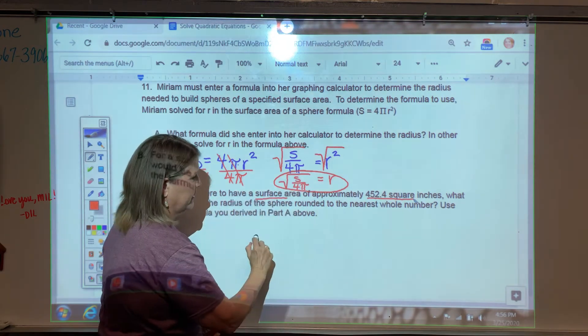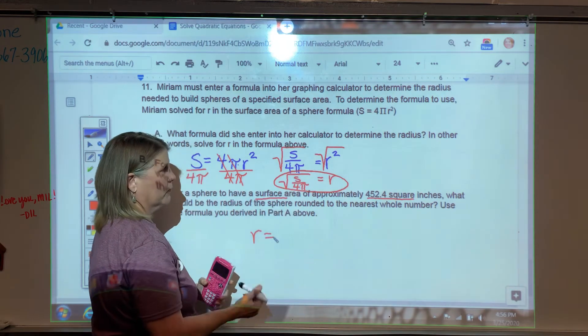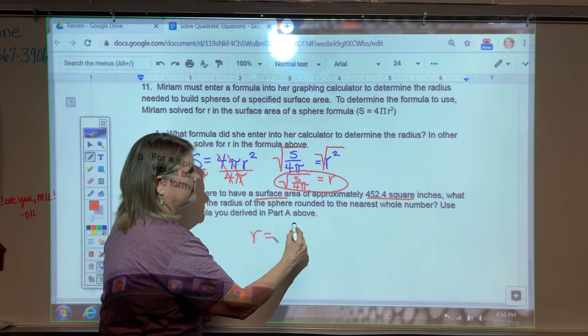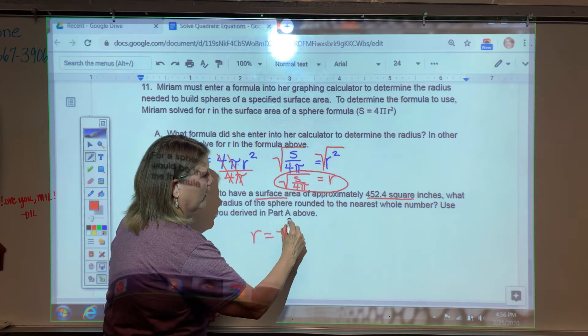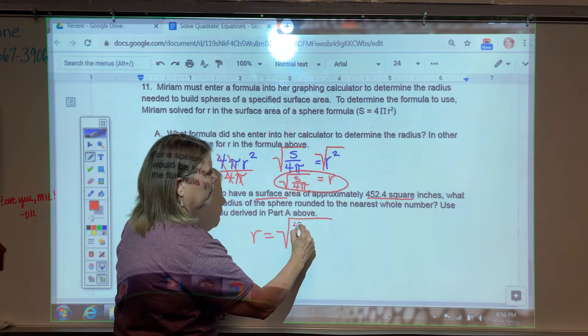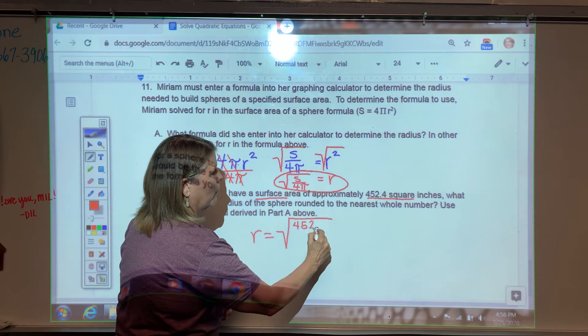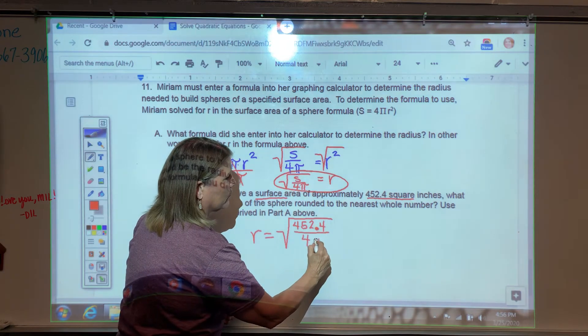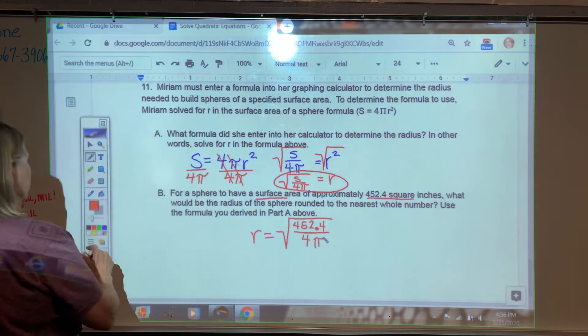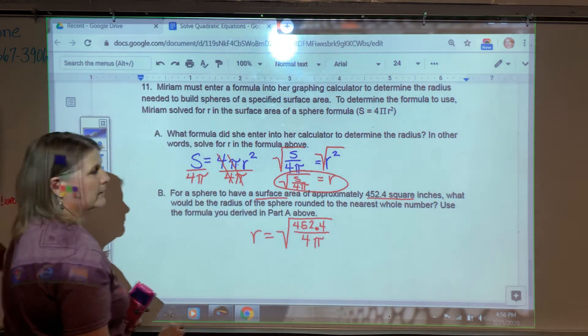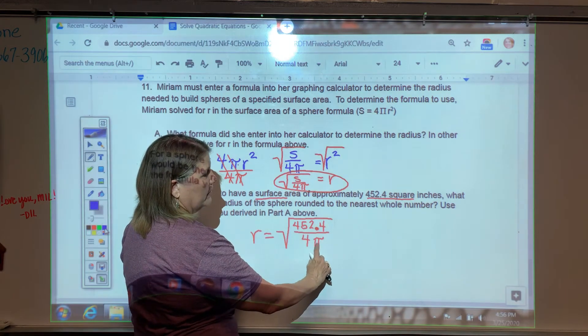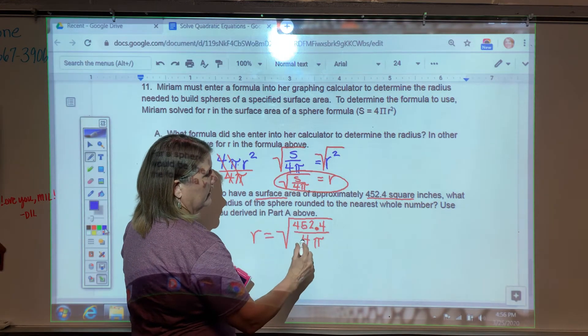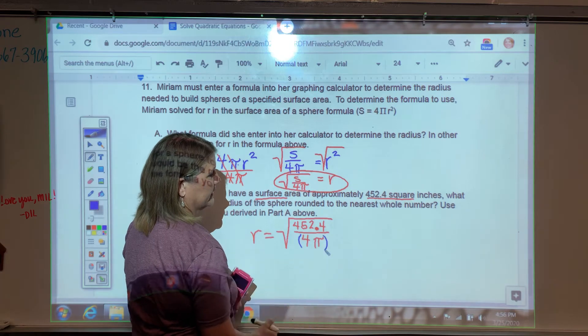So I'm going to kind of swap sides here, just so I'm not writing where you can't see. So it's basically the square root of 452.4 over 4 pi. We're going to use our calculator to do this for us, but now keep this in mind. I don't just have a single value in here. It's 4 pi. And you're going to want to protect that inside of parentheses.